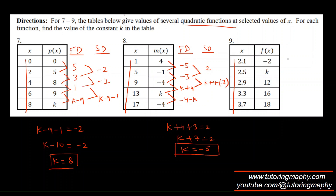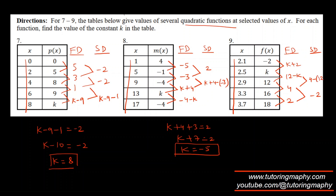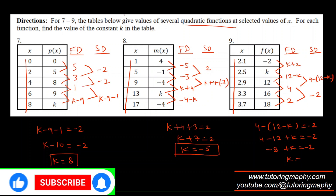For the third k-for-quadratic problem: first differences are k minus −2 = k + 2, then 12 minus k, then 4, then 2. Second differences from the numeric values give −2 and −2. Setting the other second difference equal: 4 minus (12 minus k) = 4 − 12 + k = k − 8 = −2, so k = 6.